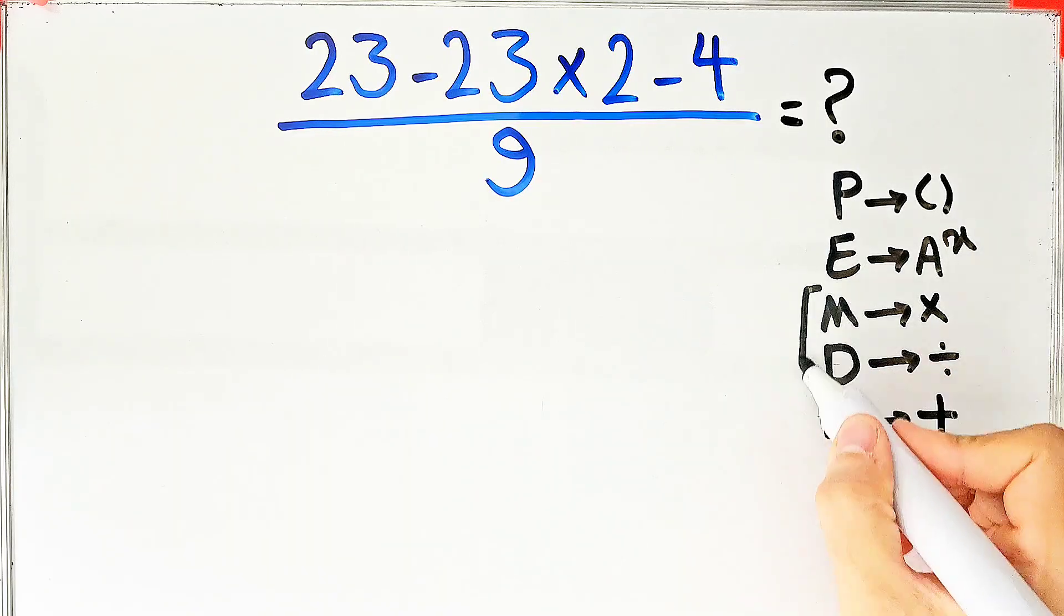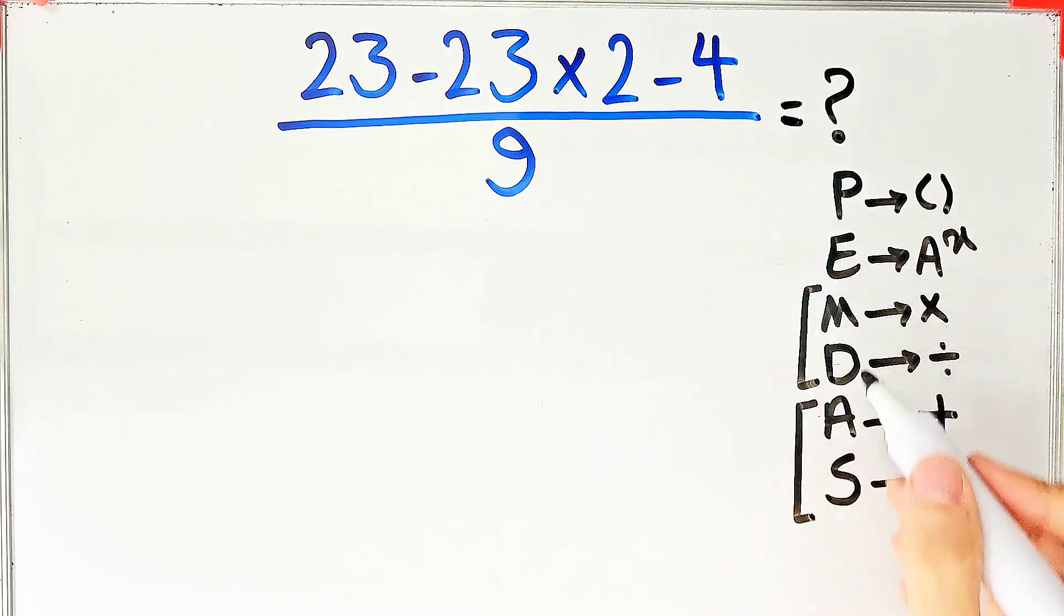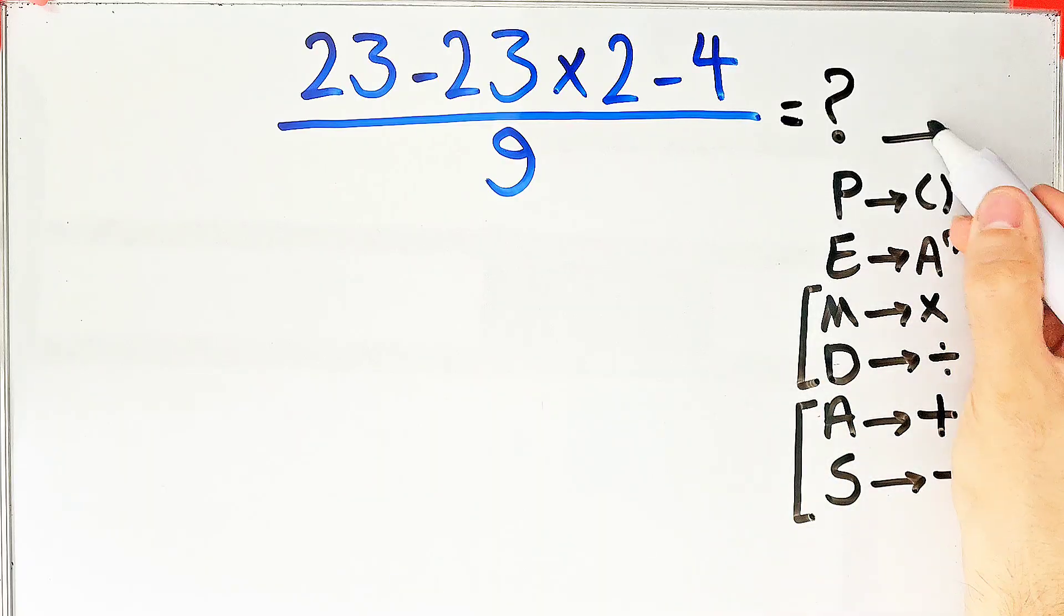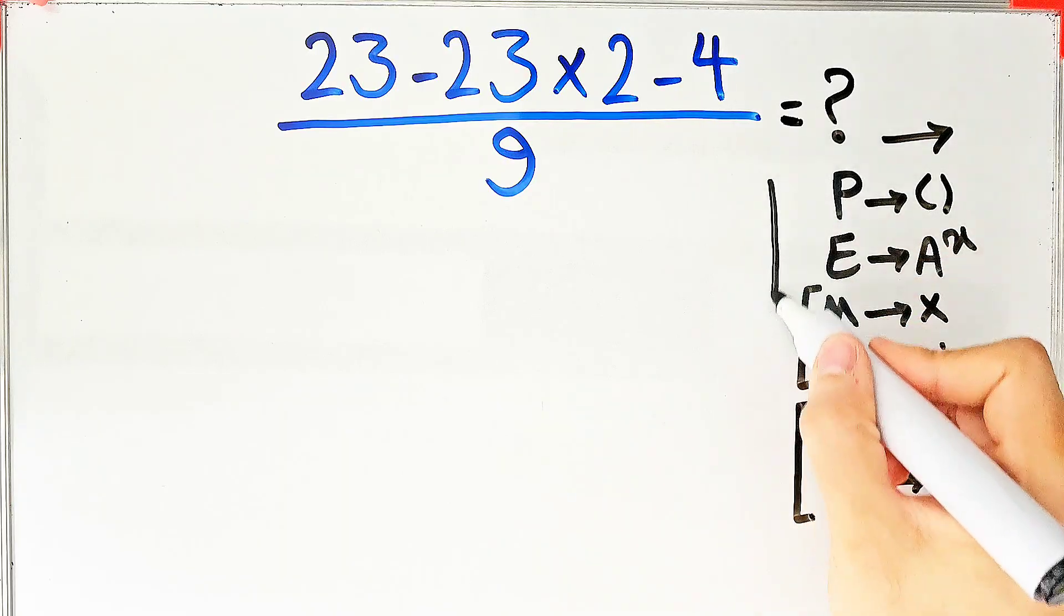Multiplication and division have the same level of priority. Also, addition and subtraction have the same priority. And when we have both in an expression, we start from the left and simplify the question. We have to follow this rule from top to bottom.